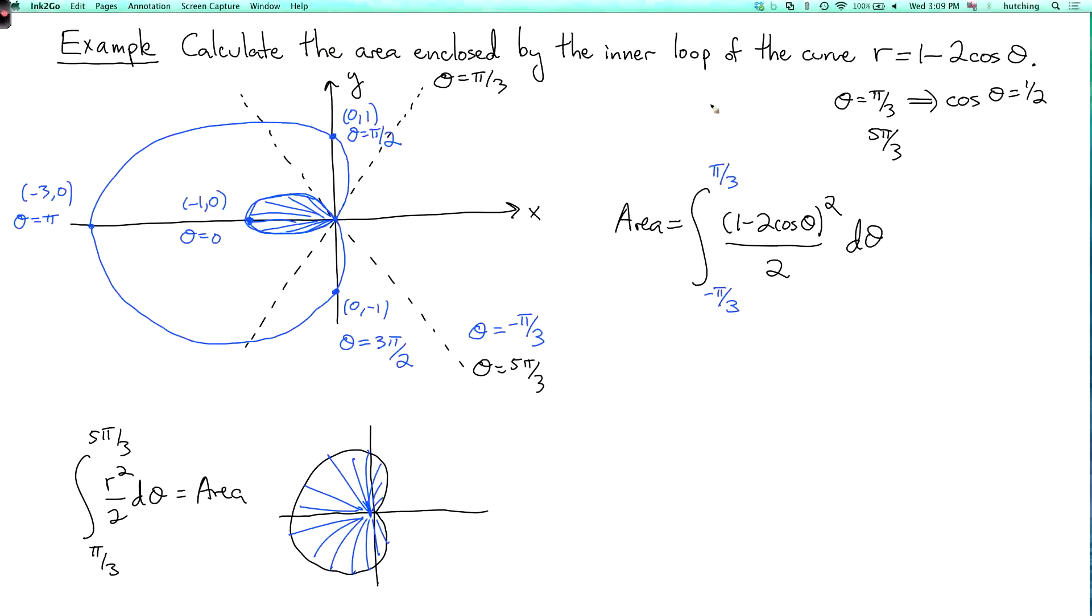There's one more subtlety, which is that over this interval, r is negative. And when I derived the area formula, I was assuming that r is always positive. That was just to avoid some confusion about saying what the region is.